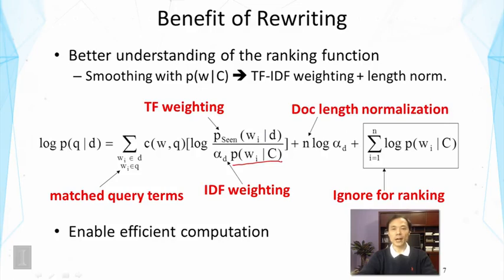But it turns out that this term here is actually related to document length normalization. In particular, alpha sub d might be related to document length. So it encodes how much probability mass we want to give to unseen words. How much smoothing do we want to do? Intuitively, if a document is long, then we need to do less smoothing. Because we can assume the data is large enough. We probably have observed all the words that the author could have written.